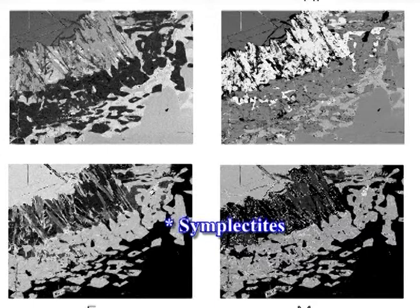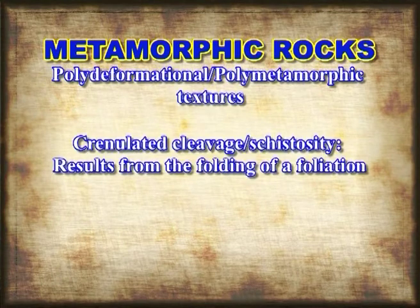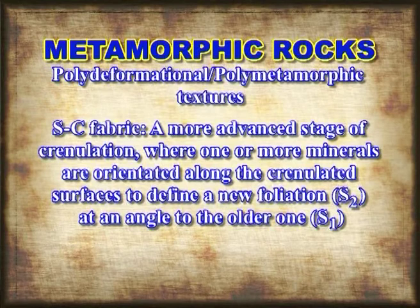These intergrowths are often recognized by their wormy appearance and often occur along the boundaries of reacting minerals. Next: polydeformational or polymetamorphic textures. Crenulated cleavage and/or schistosity: results from the folding of a foliation. SC fabric: a more advanced stage of crenulation, where one or more minerals are oriented along the crenulated surface to define a new foliation S2 at an angle to the older foliation S1. This commonly involves some form of recrystallization.